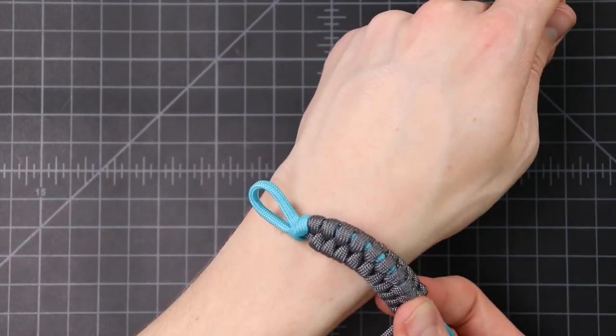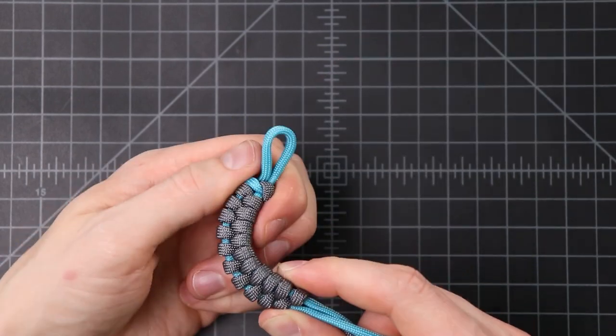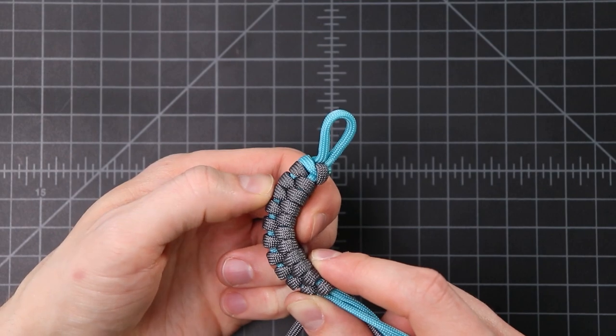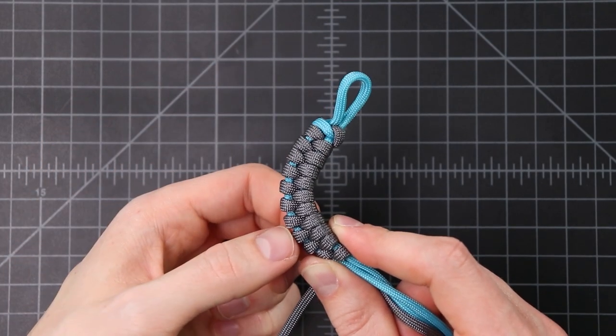So when it goes on a wrist, you'll kind of see that color popping through. That's going to keep our bracelet from twisting and just kind of add some color interest. I'm going to keep on going and I'll show you how to finish it off.